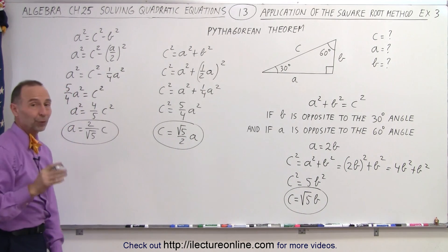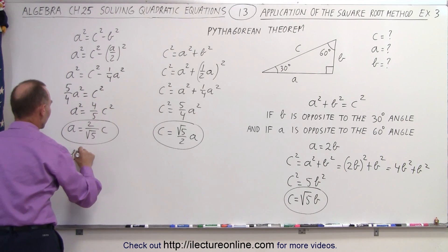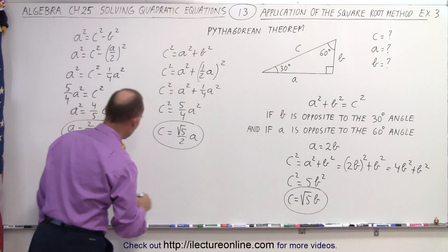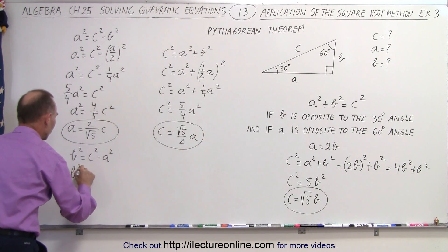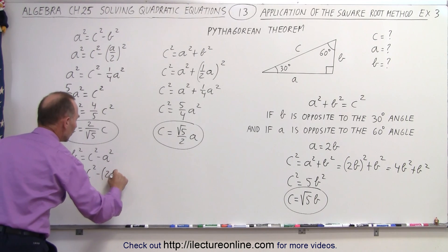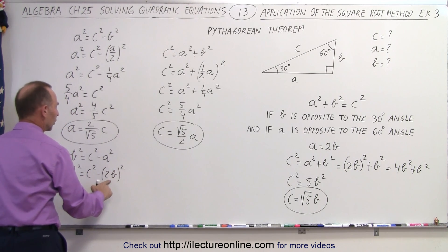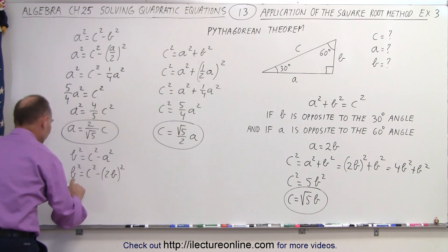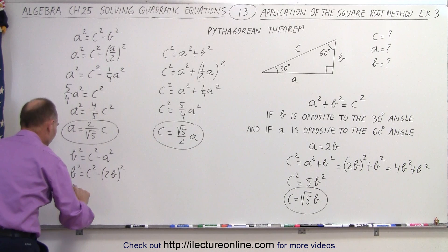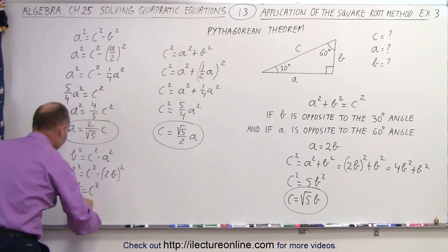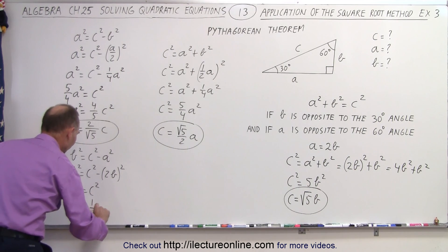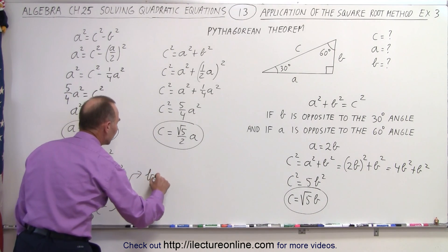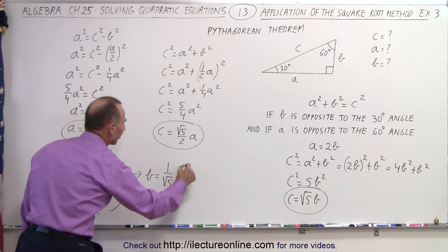Solving for B, I can say that B squared is equal to C squared minus A squared. Remember that A was equal to 2 times B, so B squared equals C squared minus 2B squared, which is negative 4B squared moved to the other side. I get 4 plus 1, which is 5B squared equals C squared, or B squared equals 1 over 5 C squared. Taking the square root of both sides, B equals 1 over the square root of 5 times C.